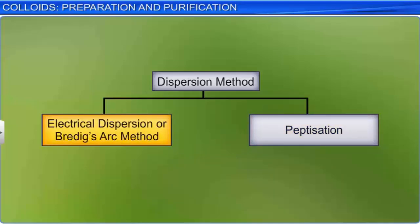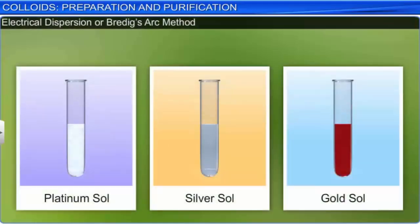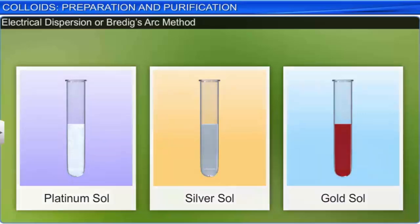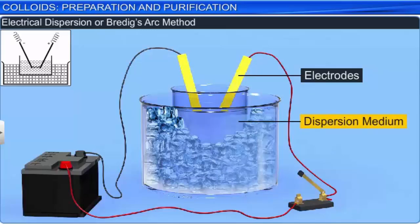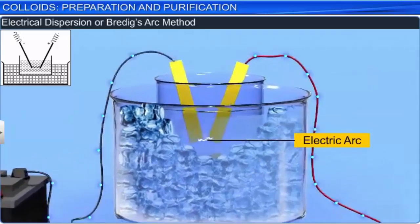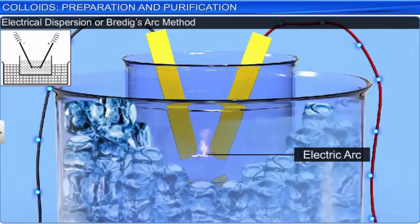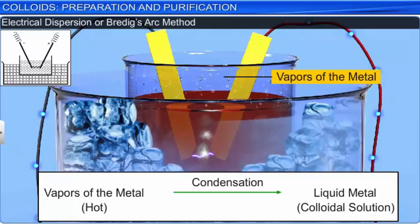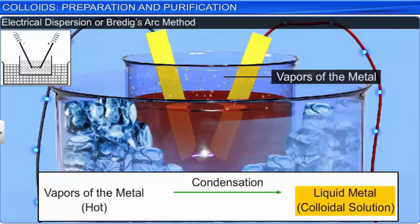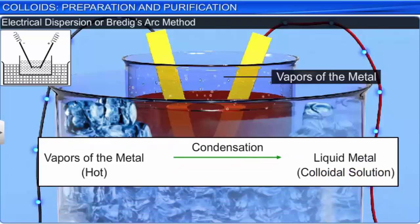The two common dispersion methods are electrical dispersion or Bredig's arc method, and peptization. In Bredig's arc method, two electrodes of the metal whose colloidal solution is to be prepared are immersed in the dispersion medium, and an electric arc is struck between the electrodes. The intense heat of the arc vaporizes the metal which gets condensed immediately in the liquid to form a colloidal solution. This method thus involves dispersion as well as condensation.